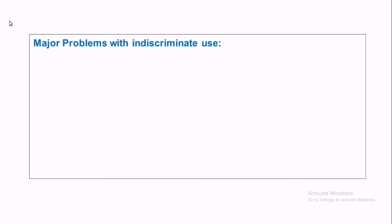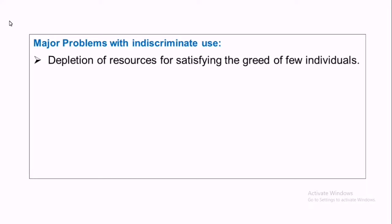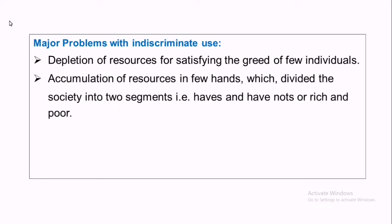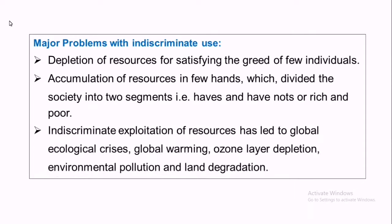What are the major problems with the indiscriminate usage of resources? First, depletion of resources for satisfying individual greed. Second, accumulation of resources in a few hands, which divides society into rich and poor. Third, it leads to global ecological crises such as global warming, ozone layer depletion, environmental pollution, and land degradation.